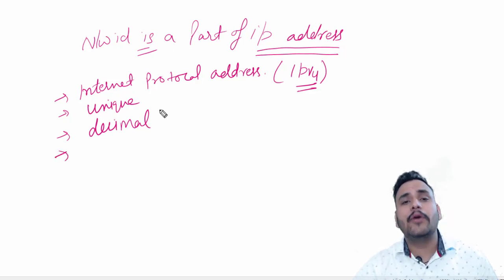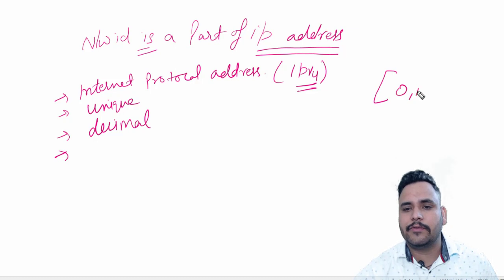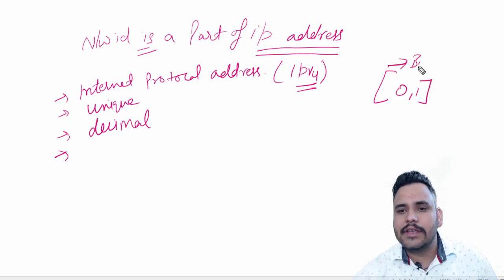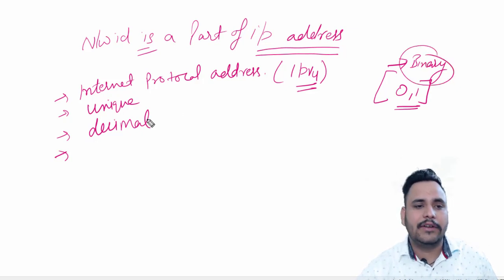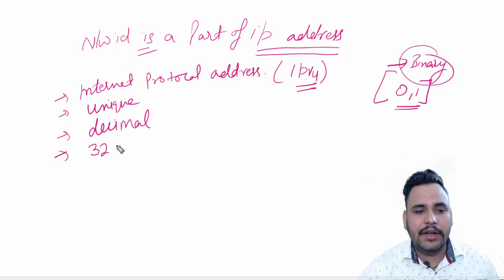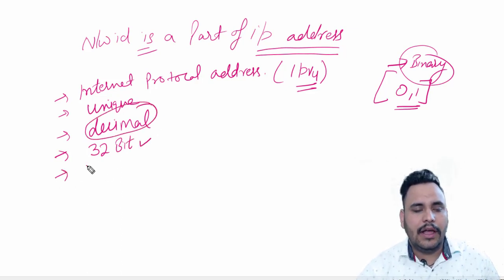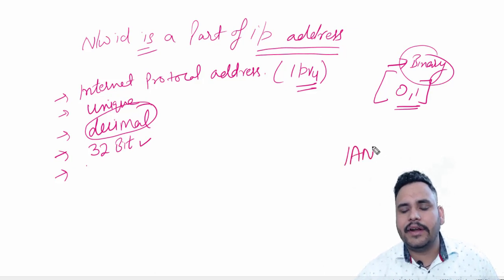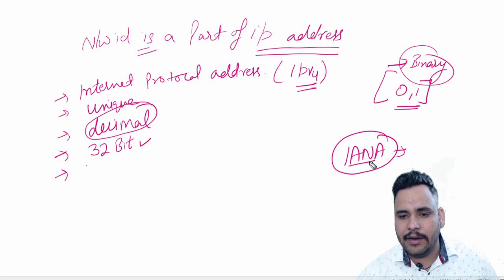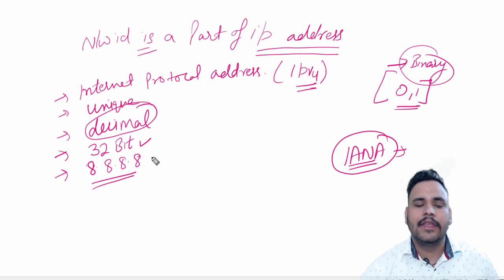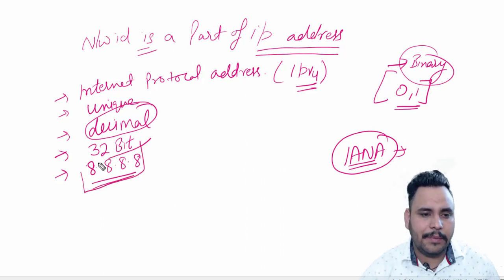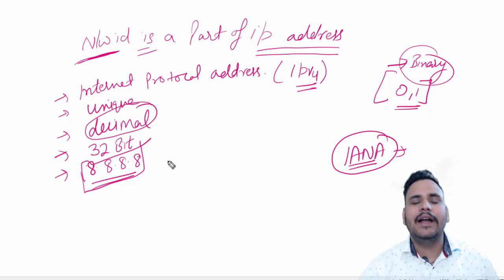But at the very start we discussed that a computer is an electronic device which works on 0 and 1 — meaning binary. So all addresses are at the very first stage in binary format. Same way, an IP address is a 32-bit address and we have converted it into decimal. The company which standardized the IP address is named IANA — Internet Assigned Number Authority — and they divided it into 4 octets, with some part being the network ID and some part being the host ID.